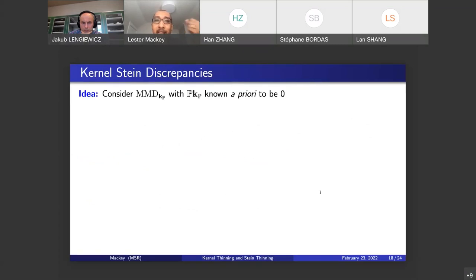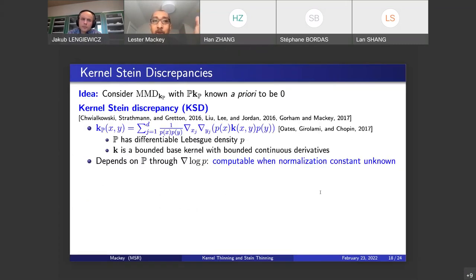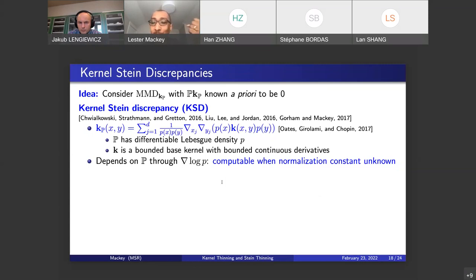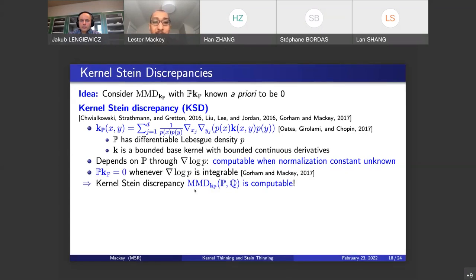One idea is to only consider kernels that we know a priori have mean zero under the target P. If we could do that, we'd get rid of the P(K) terms and be left with a computation that only depends on Q, which is fine because expectations under Q are just sample averages. This idea motivates a class of metrics called Kernel Stein Discrepancies, or KSDs. KSDs are just special MMDs with kernels that are a priori constructed to have mean zero under P. The most common such kernels only depend on the target distribution through the gradient of its log density — something computable even when the normalization constant is unknown. Under mild conditions — for instance, if the grad-log-P is integrable — the expectation of this kernel is zero under P, so we can evaluate the MMD using only sample averages.